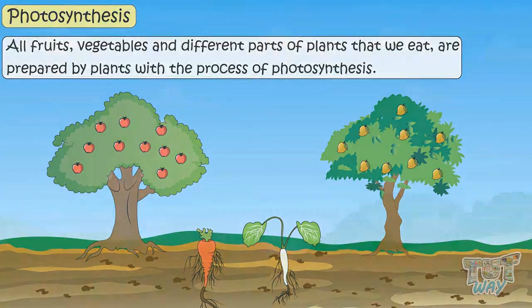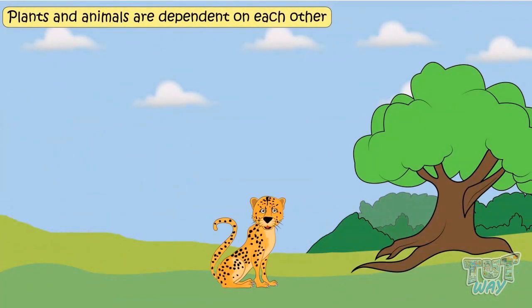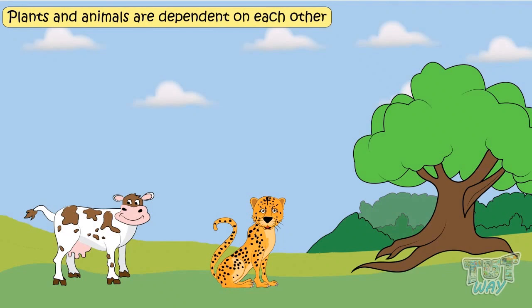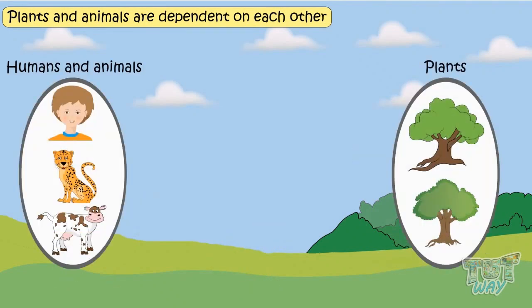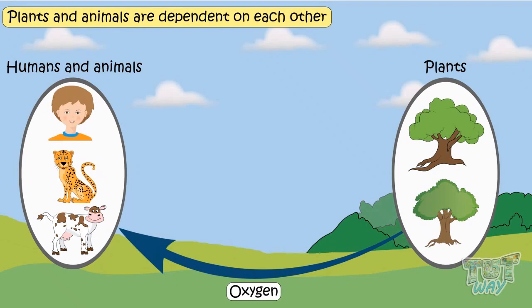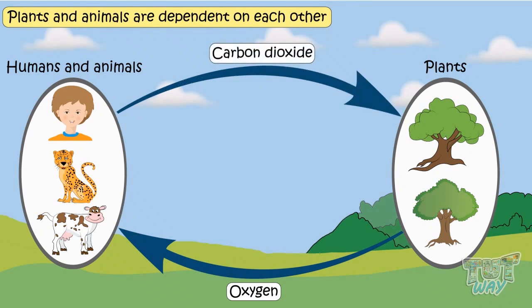Kids, do you know plants and animals are dependent on each other? Let's see how. All animals and humans need plants for their food and also for breathing, as plants provide oxygen which all living things need to breathe. But plants too need animals and humans. All plants need carbon dioxide to breathe in, like we need oxygen, and carbon dioxide is provided to plants by all animals and humans. As we breathe in oxygen and give out carbon dioxide, this carbon dioxide is used by plants.